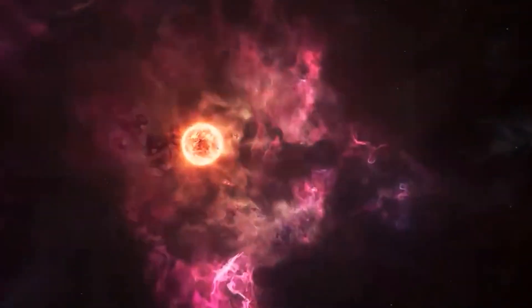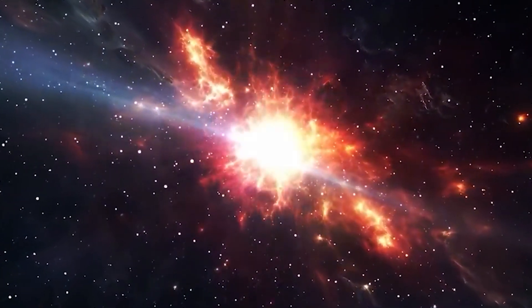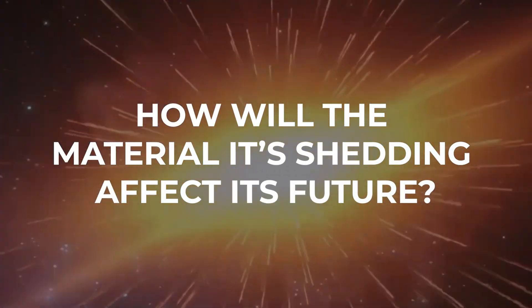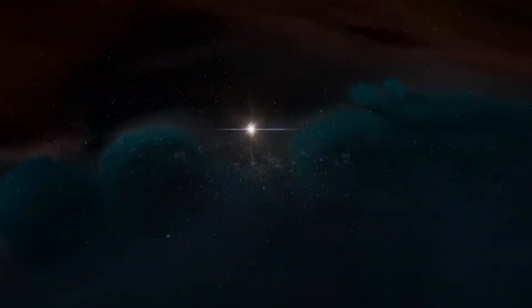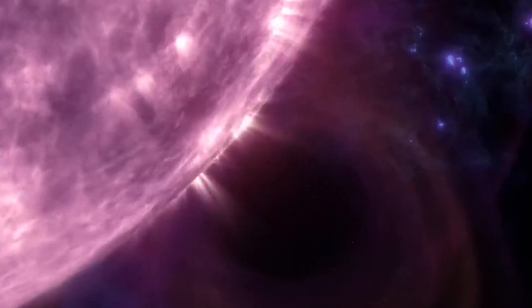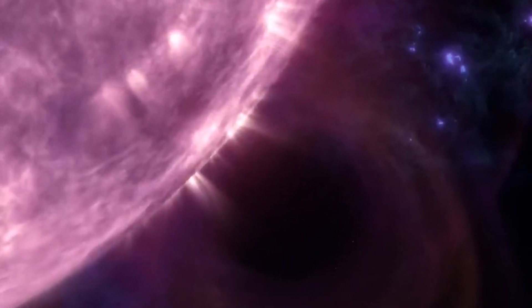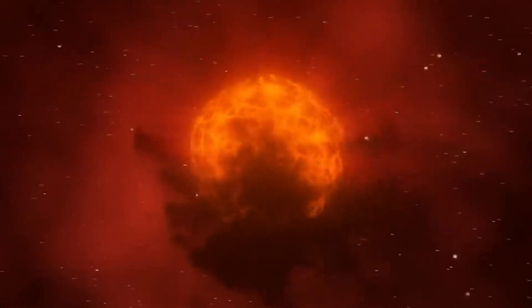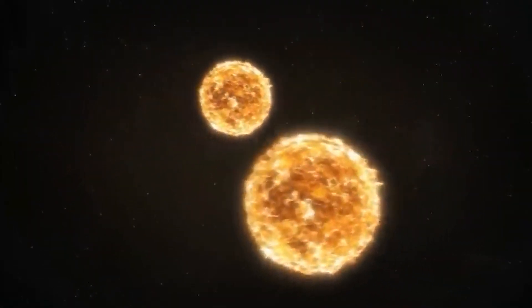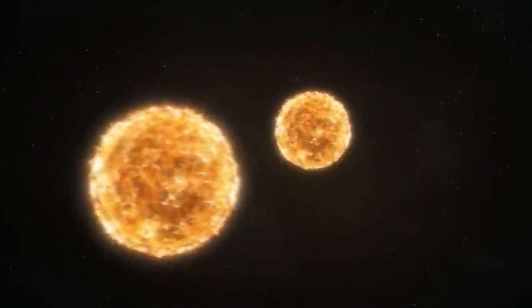Betelgeuse's recent surge in brightness raises another fascinating question. How will the material it's shedding affect its future? As the star continues to lose mass, the balance of forces within it starts to wobble. This could destabilize Betelgeuse and speed up its journey toward a supernova explosion. Some scientists suggest that stars like Betelgeuse experience periodic outbursts where they shed huge amounts of material as they approach the end of their lives.